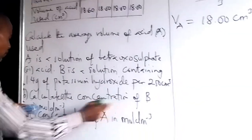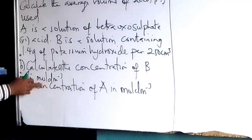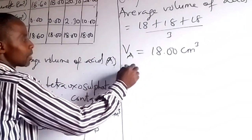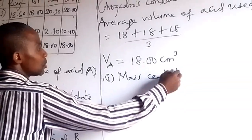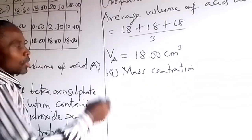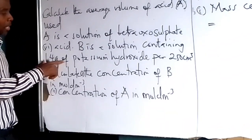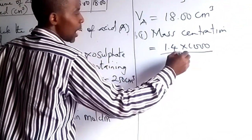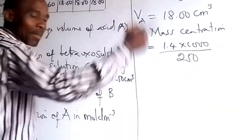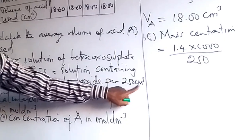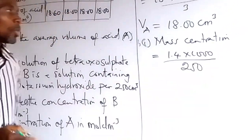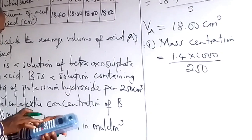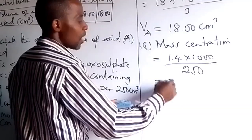So it says calculate the concentration of B in moles per cm³. Before we can calculate this one, we have to first of course get the mass concentration. We are solving for B now. So get the mass concentration. Now, 1.4 grams of potassium, 250 cm³. So what we are going to do now is 1.4 times 1000 divided by what? 250. This one gives us the concentration in grams per dm³.